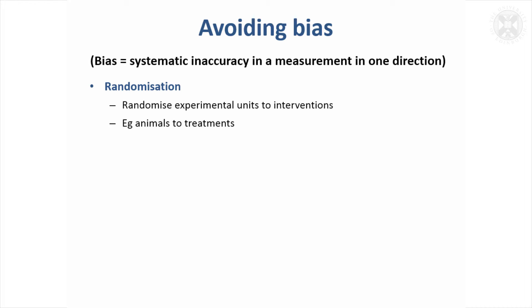There are things we can do to avoid bias. The first is randomisation — randomising the experimental units to the interventions. For example, if we were allocating animals to interventions, we would do it in a random order; we wouldn't put the first ten to one intervention and the next ten to the other. That's a key way to avoid bias.